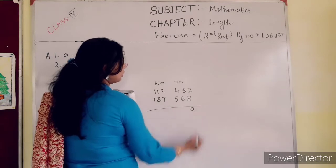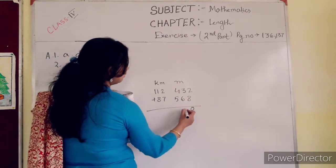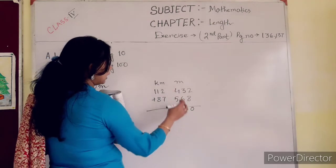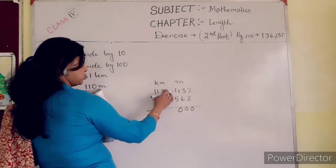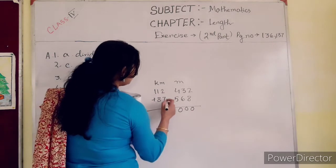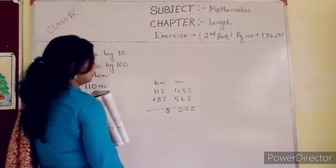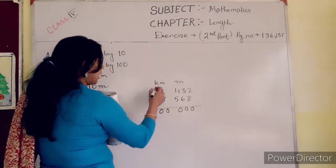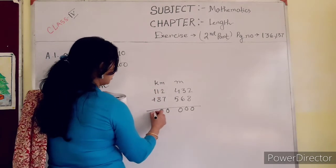8 plus 2, 10, 1 is in your hand. 6 plus 3, 9, 9 plus 1, 10, again 1 is in your hand. 5 plus 1, 9, 9 plus 1, 10, again 1 is in your hand. 7 plus 2, 9, 9 plus 1, 10, 1 is in your hand. 8 plus 1, 9, 9 plus 1, 10.